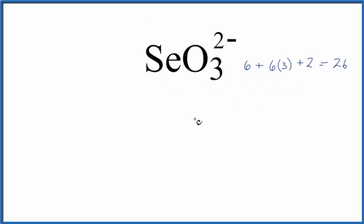So Se is the least electronegative element. We're going to put that in the center of our Lewis structure. Then we'll put the three oxygens around it.